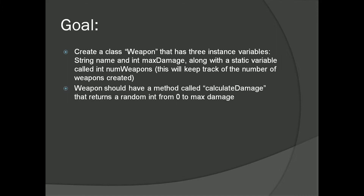The Weapon class should also have a method called calculateDamage, and this is going to return a random number from zero to maxDamage. This is kind of representing that game concept of random damage in RPGs and stuff.